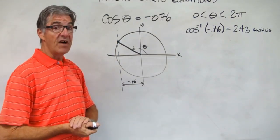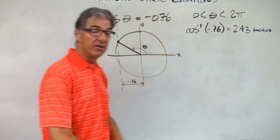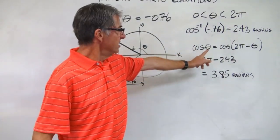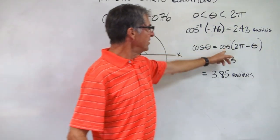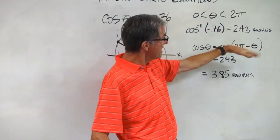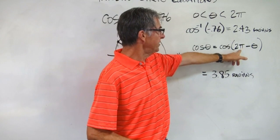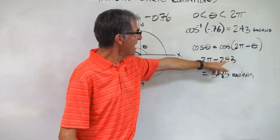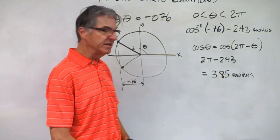Pause the video and find the second one that's in 0 to 2 pi radians. Here we go — what I remembered was that we had this identity from the last lesson: cosine theta equals cosine of 360 minus theta. Since this problem is in radians, I did 2 pi minus theta. So 2 pi minus 2.43 gives me 3.85 radians.